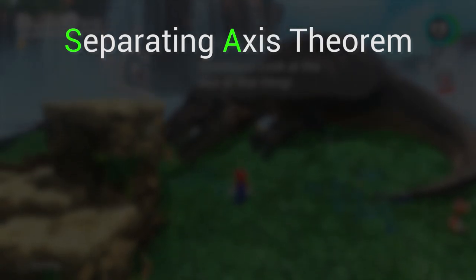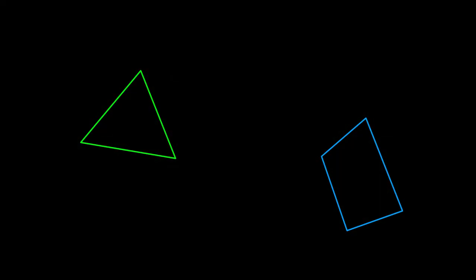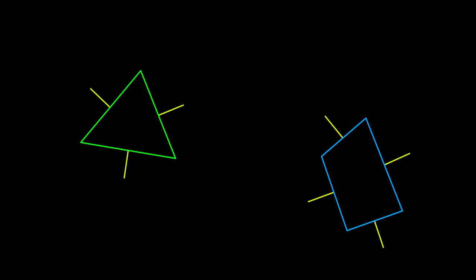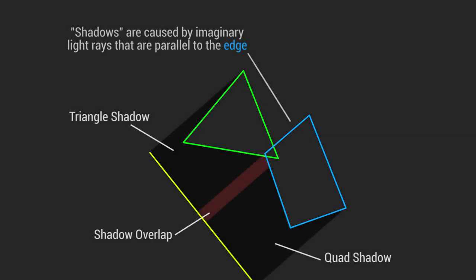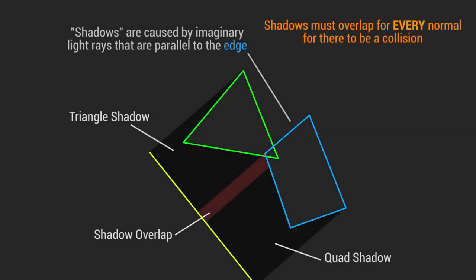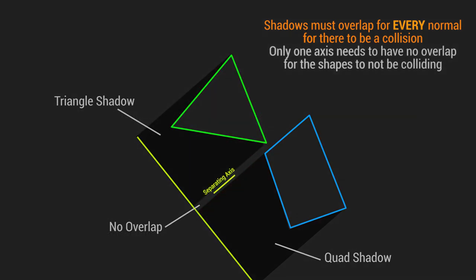Collision detection using the separating axis theorem lets you check if two convex shapes are colliding and also allows rotation, but it's also a little more complicated. To check collision with SAT, you first need to find the normals of all the edges on both shapes. Then for each normal you need to find the shadows that the two shapes cast. If for every normal the shadows overlap, then the shapes are colliding. Otherwise they aren't, and the axis that the shadows don't overlap on is the separating axis.